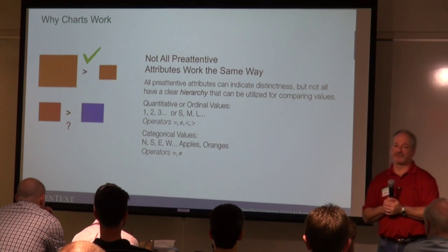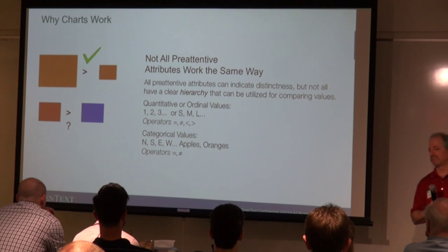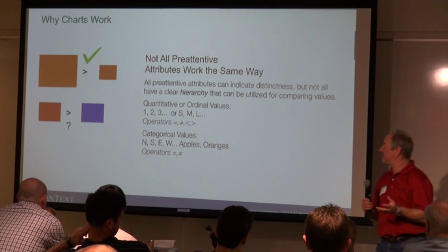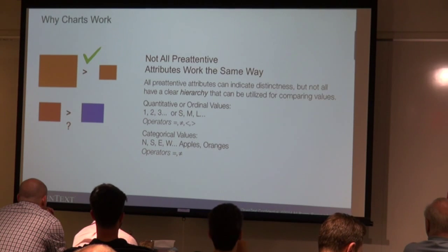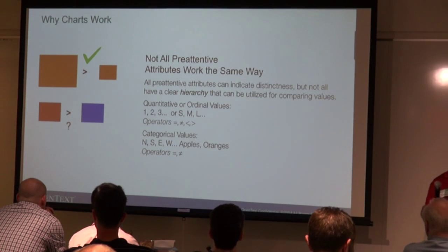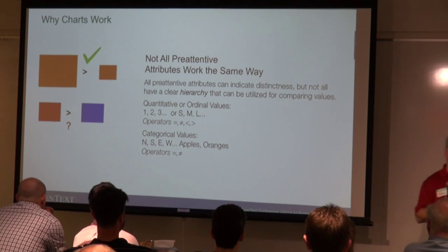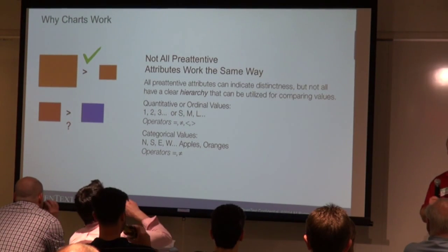Not all pre-attentive attributes work the same way. A larger square is greater than a smaller square, but is red greater than blue? Probably don't know. There are two types of pre-attentive attributes: quantitative — where things are bigger or smaller than something else — and categorical, like apples versus oranges. Quantitative means something can be larger than something else; categorical means they're just different. So there are different things you want to measure.